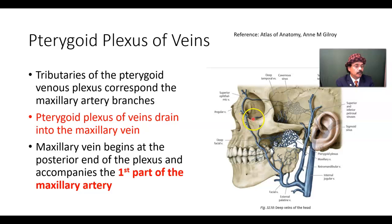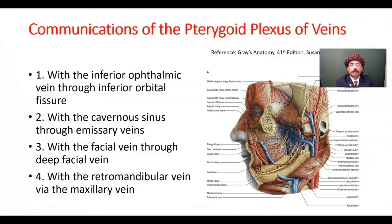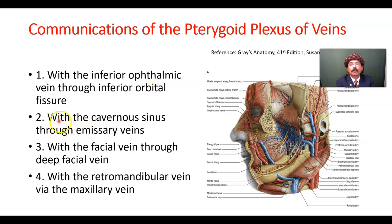It is also communicated to the inferior ophthalmic vein, and from there to the cavernous sinus. The communications of the pterygoid plexus of veins with the inferior ophthalmic vein occur through the inferior orbital fissure. The inferior ophthalmic vein is also communicated to the superior ophthalmic vein, which in turn communicates to the cavernous sinus. It is also communicated with the cavernous sinus via the emissary vein.